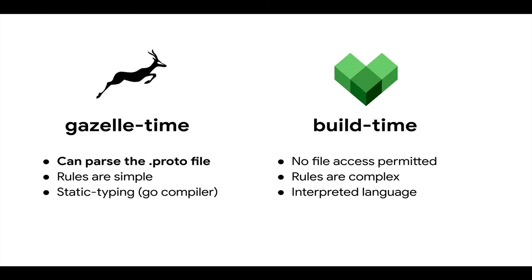This underscores why proto rules are a good fit for Gazelle — because rather than waiting until the user types 'bazel build,' and with one hand tied behind our back because Starlark doesn't let us read the actual file, we can shift all that complexity into Gazelle where we can use better tooling, static typing, the Go compiler, and write better tests. As a result, the remaining Starlark logic becomes really refreshingly simple.